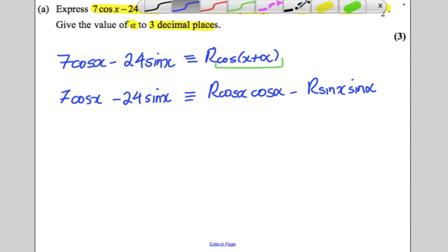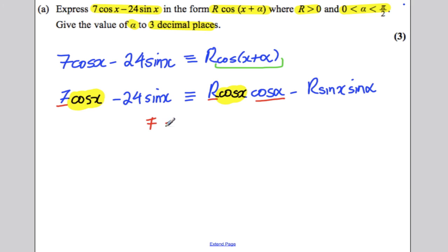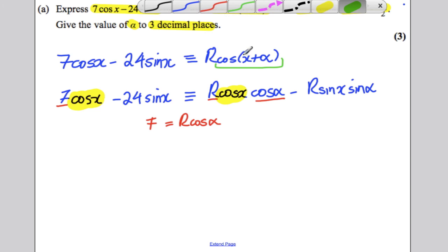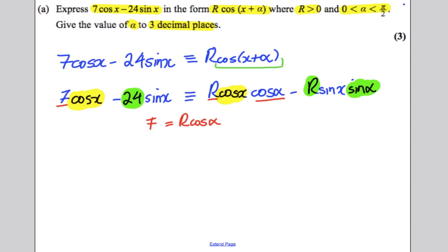Now you just equate coefficients. Let's deal with cos x here. 7 must be equal to r cos alpha. So it's important you get that the right way around. So 7 must be equal to r cos alpha. And in a similar manner, 24 must be equal to r sin alpha. So 24 must equal r sin alpha, equating sin x's.